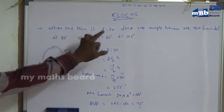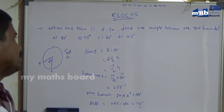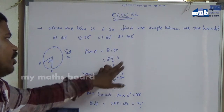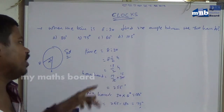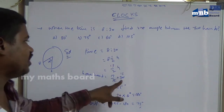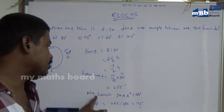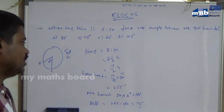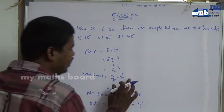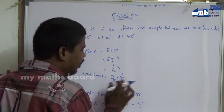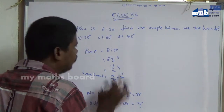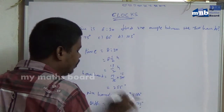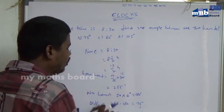When the time is 8:30, that means 8 and a half hours, or 17 by 2 hours. The hour hand rotates 30 degrees per hour, so 17 by 2 into 30 gives 255 degrees. The minute hand rotates 6 degrees per minute, so 30 into 6 equals 180 degrees.